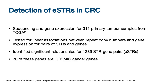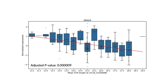For 70 of these genes there were actually listed in the COSMIC database as being related to cancer. As an example of an ESTR, I'm showing here the association we found between the copy number of one particular short tandem repeat, listed along the x-axis, and the expression of the SMAT4 tumor suppressor gene across all our tumor samples.